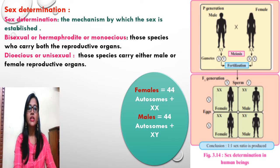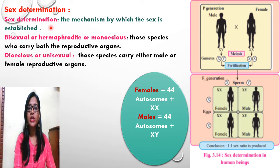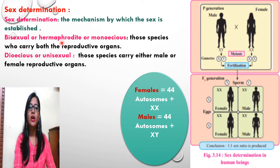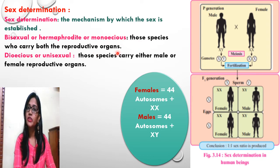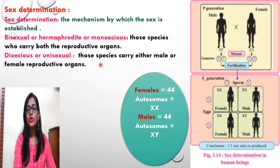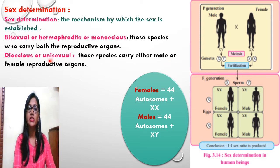In this slide, we will understand how sex is determined in human beings. Sex determination is the mechanism by which sex is established or decided. Bisexual or hermaphrodite species carry both reproductive organs. Dioecious or unisexual species carry either male or female reproductive organs.